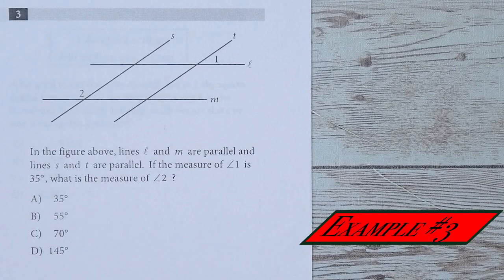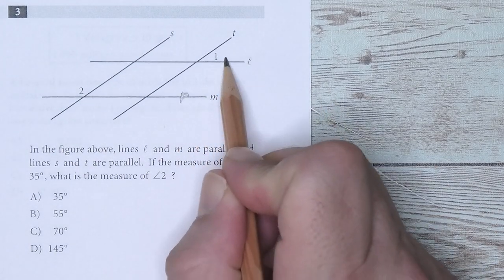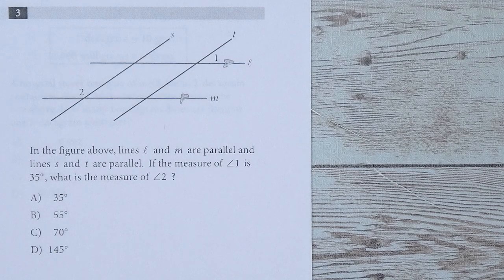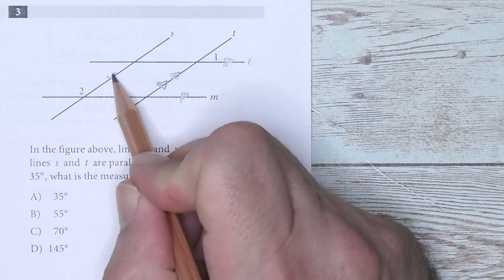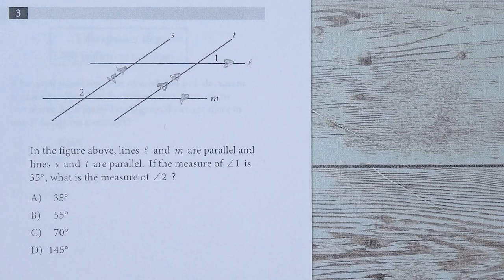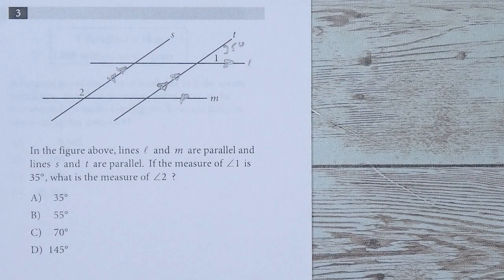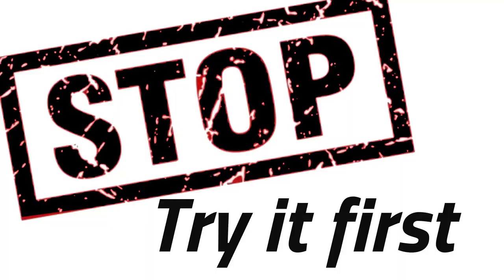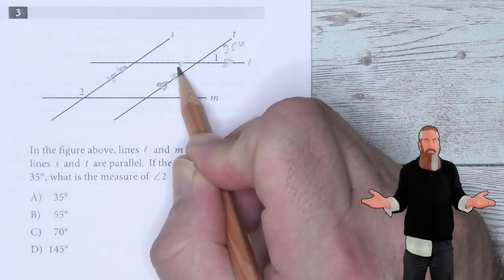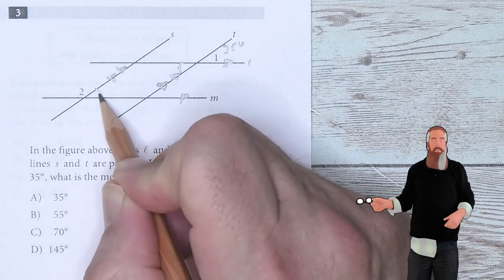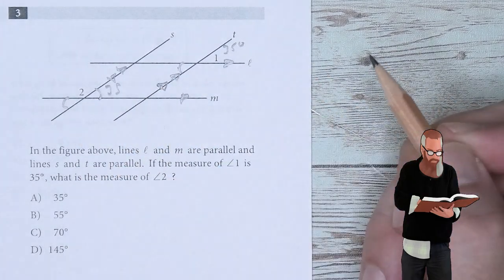In the figure above, lines L and M are parallel, so it's always nice to give yourself those visual markers by putting in those triangles. And S and T are parallel, so I will put in those markers as well. If the measure of angle one is 35 degrees, let's write 35 degrees in there. What is the measure of angle two? It's important to keep track of this angle one.